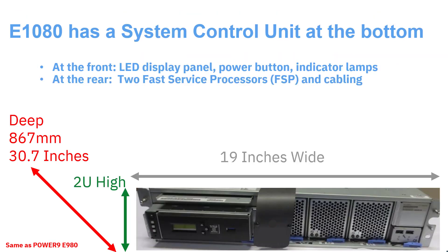In addition to the CEC nodes, we have a system control unit — just one of these. The most important thing in it is the two fast service processors, or FSPs, and the cabling that goes out to each of those nodes. This is like the master controller — it helps power up the box, powers it down, and does the configuration for adapters and all that sort of thing. 19 inches wide, 2U high and 30 inches deep, very much the same dimensions as the previous E980.